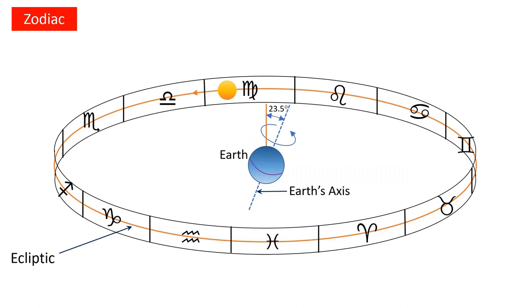Earth completes one rotation around its axis in 24 hours. The zodiac is a big circular band around the ecliptic, so while rotating around its axis, Earth also cycles through the zodiac — that is, 12 zodiac signs — in 24 hours. Thus Earth covers one zodiac sign in two hours.